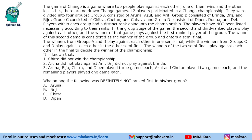The game of Chango is played where 2 people play against each other. One of them wins and the other loses — there are no drawn Chango games. 12 players participated in a Chango championship and were divided into 4 groups. Group A: Aruna, Azul and RF. Group B: Brinda, Bridge and Biju. Group C: Chitra, Chetan and Chavi. Group D: Deepin, Dona and Dev. They've made the set confusing by placing names with the same initial letters in those groups.